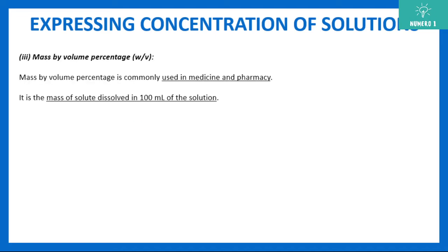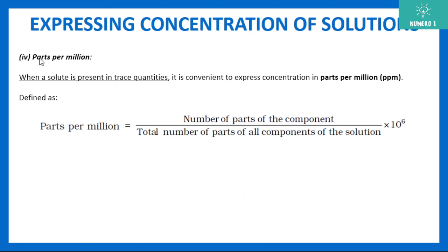We also have mass by volume percentage, which is used in medicine and pharmacy. If you check the back of any capsule or tablet, it tells you how much mass of solute is dissolved in 100 mL of solution — for example, milligrams or grams per 100 mL. The unit is expressed as mass divided by volume, so it is written as mass/volume.